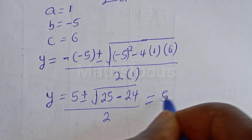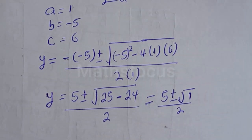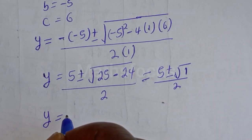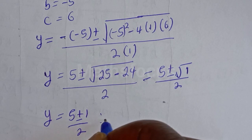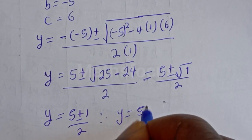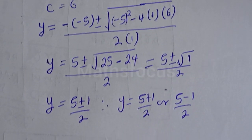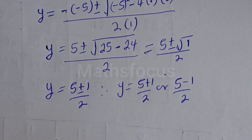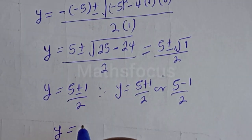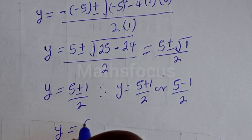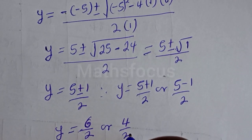This gives us Y is equal to 5 plus or minus the square root of 1, all over 2. Then Y is equal to 5 plus or minus 1, over 2. Therefore Y is equal to 5 plus 1 over 2, or 5 minus 1 over 2, which is 6 over 2 or 4 over 2.